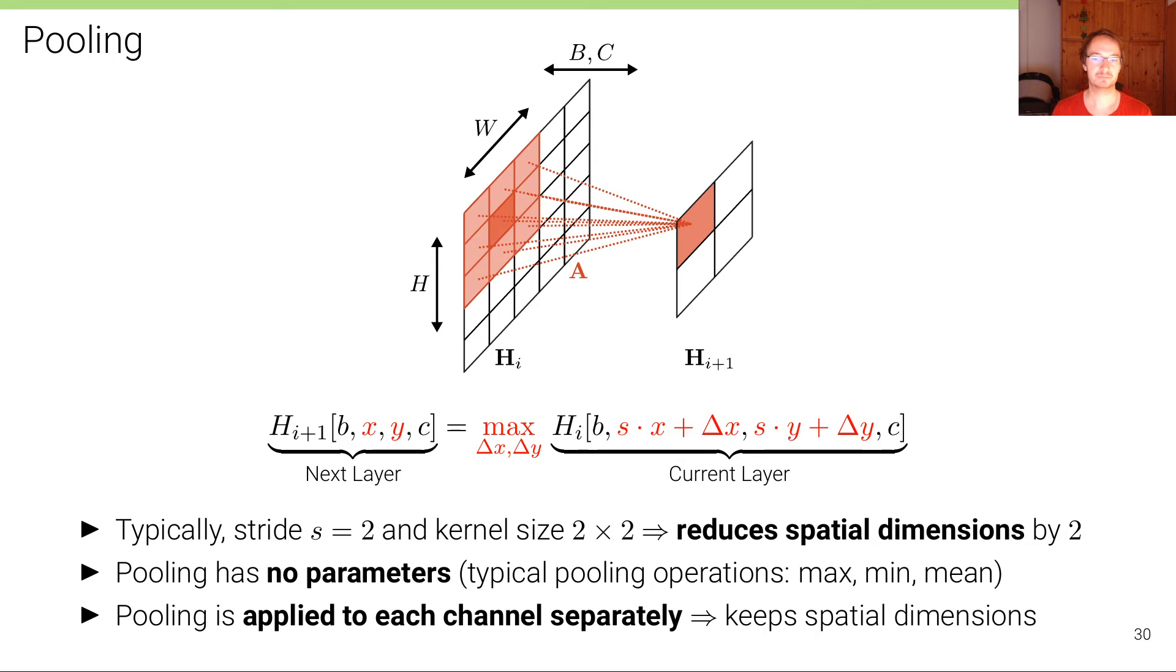Pooling simply operates on each channel separately and takes a particular region in the image defined by the pooling kernel. In this example, it's 3x3 and takes the pooled value, for instance the maximum in the case of maximum pooling, and puts that value at that output location. Then it moves on with a certain stride, typically jumping over one input pixel. In this case, the stride would be 2.